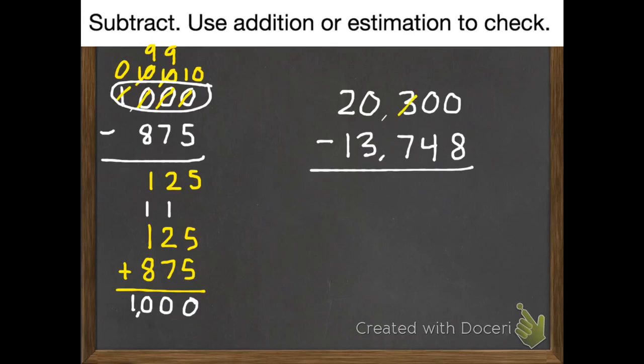Borrow from our hundreds. Gives us 2 hundreds. That hundred turns into ten tens. We borrow a ten, which gives us ten ones. Ten subtract 8 is 2. Nine subtract 4 is 5.